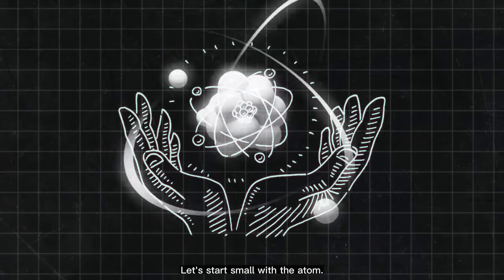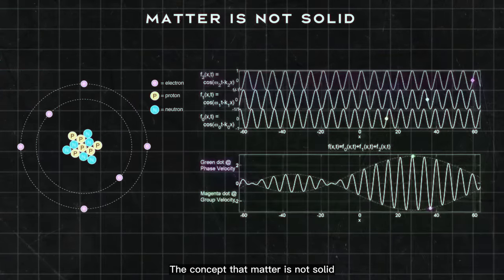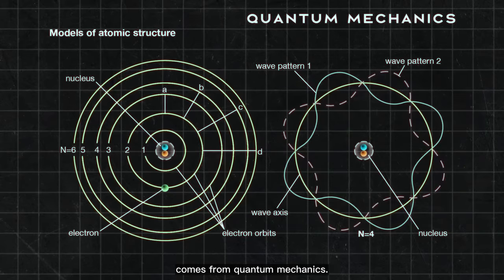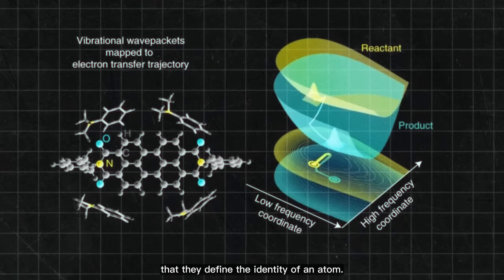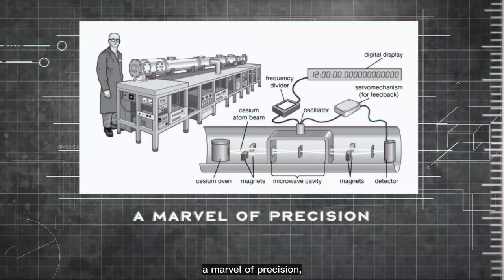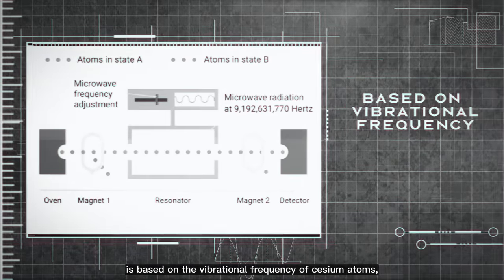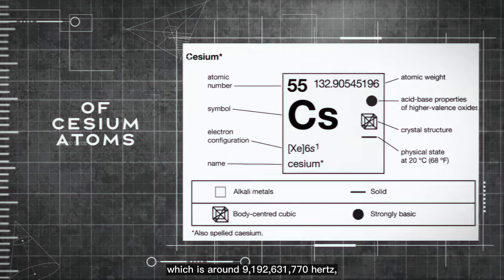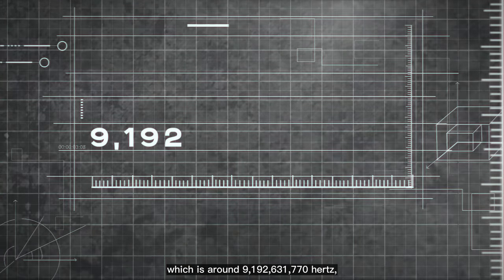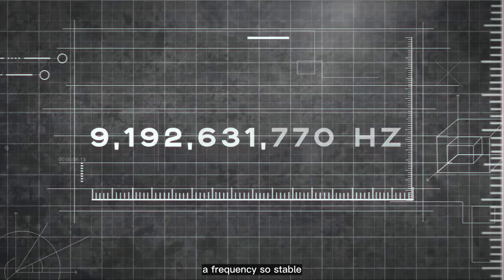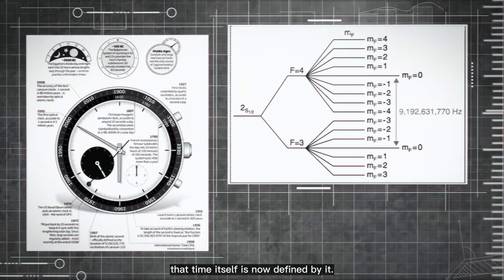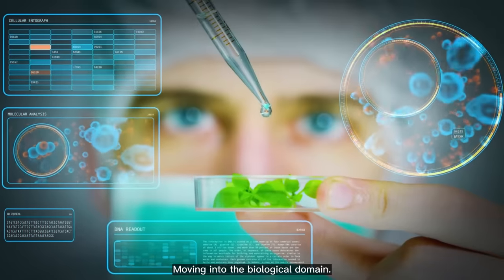Let's start small, with the atom. The concept that matter is not solid, but a cloud of potentialities, comes from quantum mechanics. Electrons vibrate at specific frequencies determined by their energy levels, and these frequencies can be so exact that they define the identity of an atom. The atomic clock, a marvel of precision, is based on the vibrational frequency of cesium atoms — around 9,192,631,770 hertz — a frequency so stable that time itself is now defined by it.